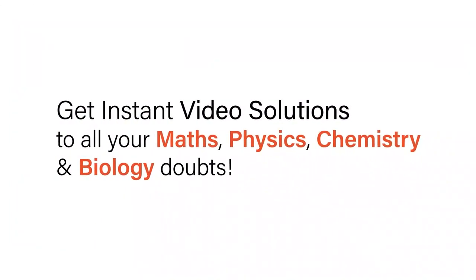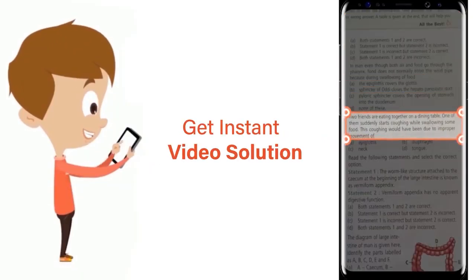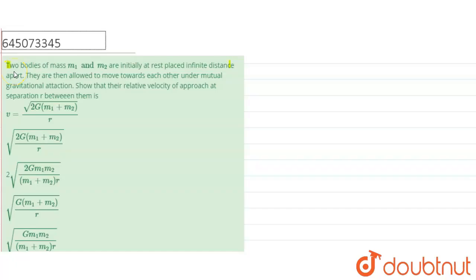With Doubtnet, get instant video solutions to all your maths, physics, chemistry, and biology doubts. Just click the image of the question, crop the question, and get instant video solution. Download Doubtnet app today. Hello everyone, two bodies of mass m1 and m2 are initially at rest placed infinite distance apart.